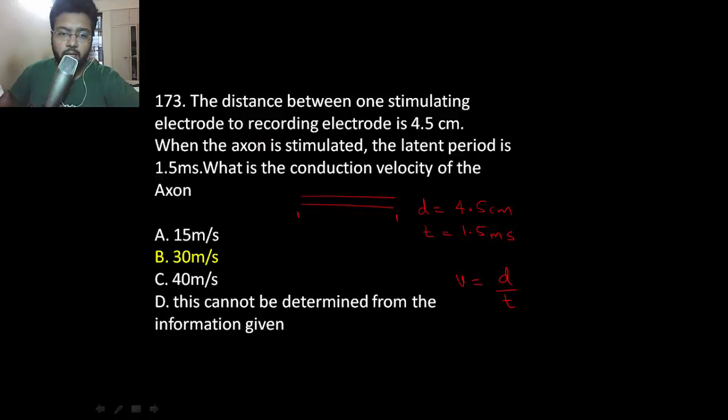Okay guys, last few minutes for the day and we'll end our discussion by general physiology. Here's the question: the distance between one stimulating electrode to the other is 4.5 cm and the latent period is 1.5 milliseconds. So you're given distance and time, and you're asked to measure the conduction velocity of the axon.